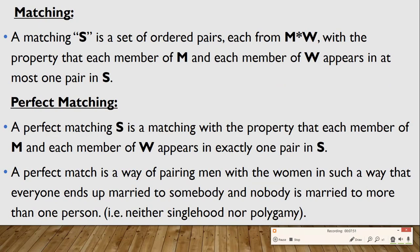To talk more about this example, we should be familiar with some terminologies. The first is matching. A matching set S is a set of ordered pairs each from M cross W, with the property that each member of M and each member of W appears in at most one pair in S. That is, no member of M or W can appear twice.